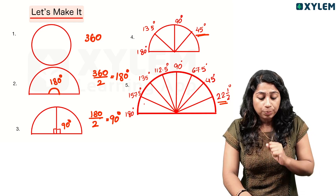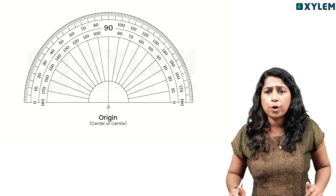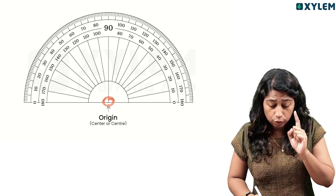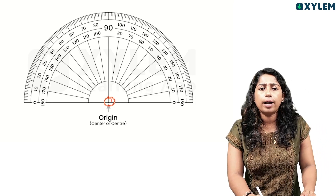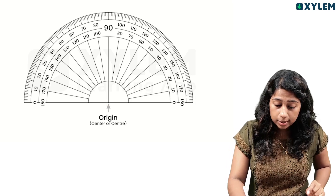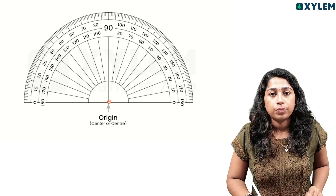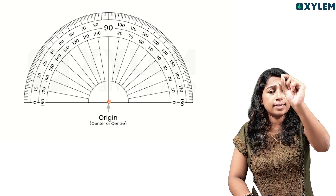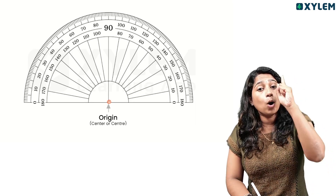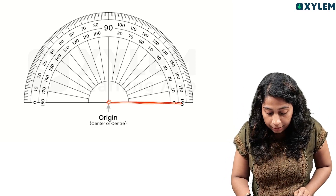Now let's measure using this protractor. This is our protractor. There is a very important point — this is the origin. When you are measuring an angle, the angled vertex must be placed at the origin. One arm of the angle is placed along the baseline of the protractor.